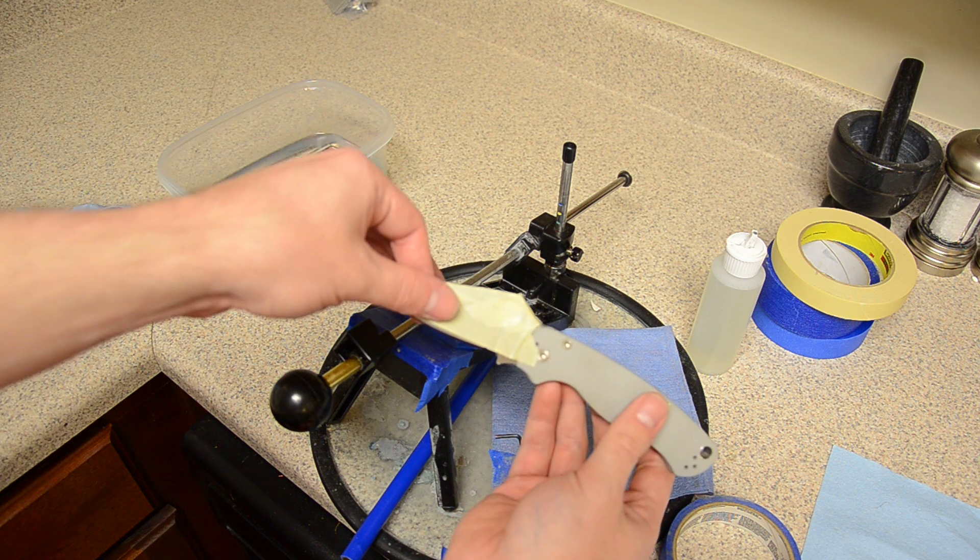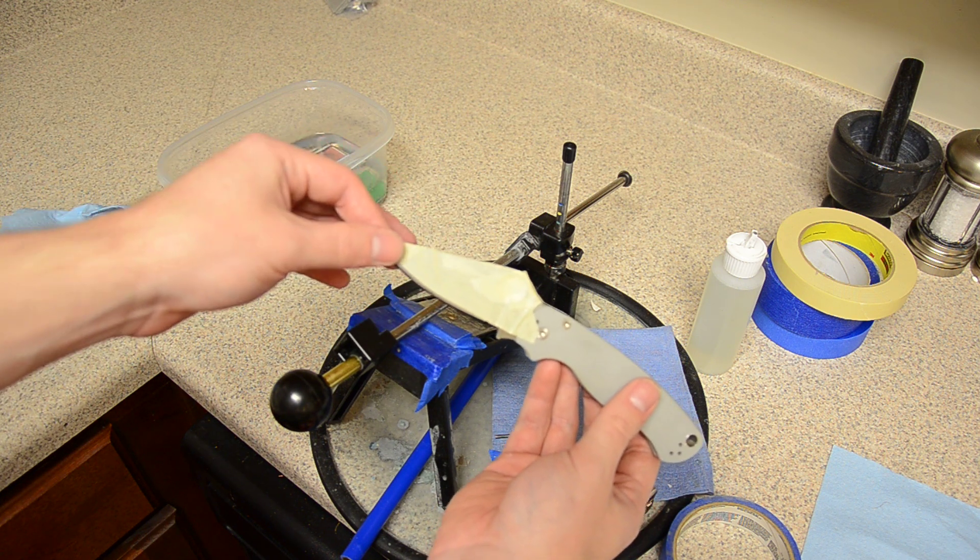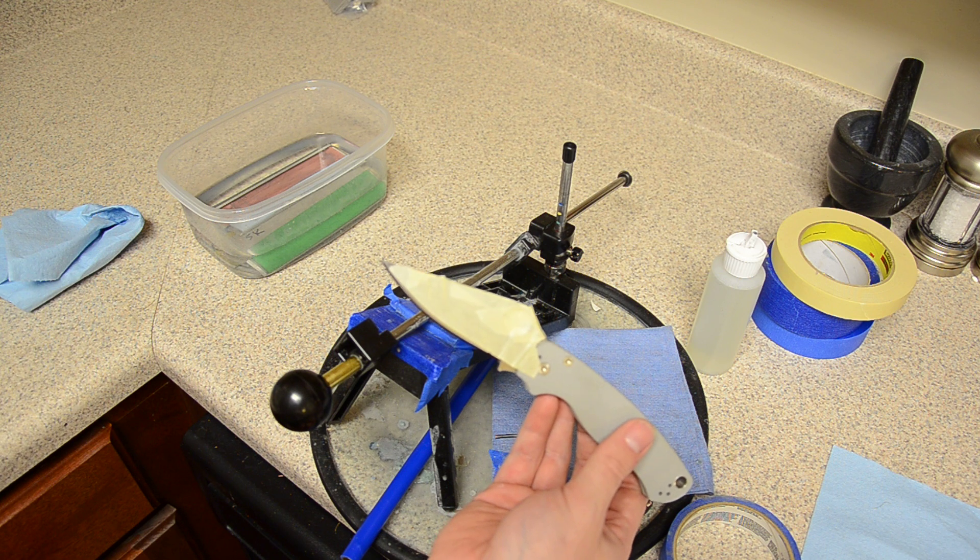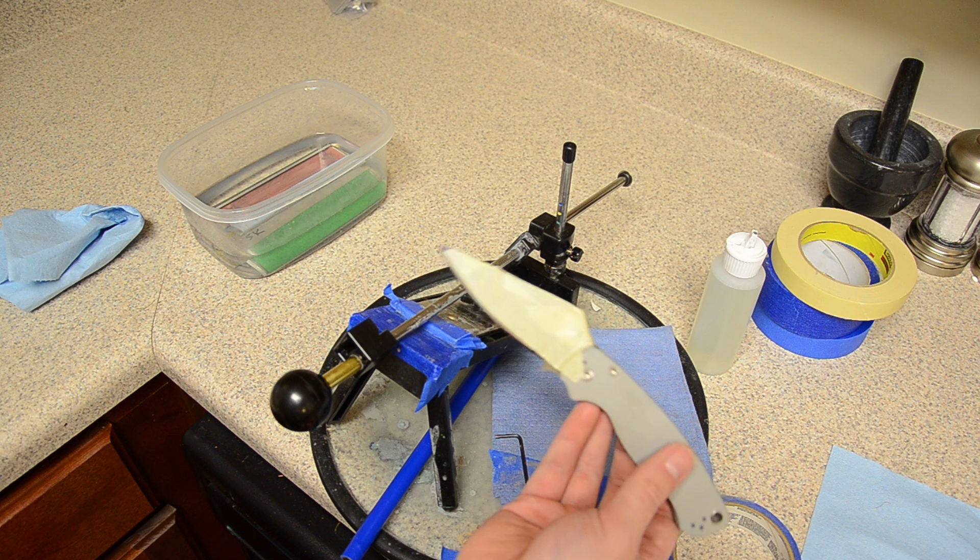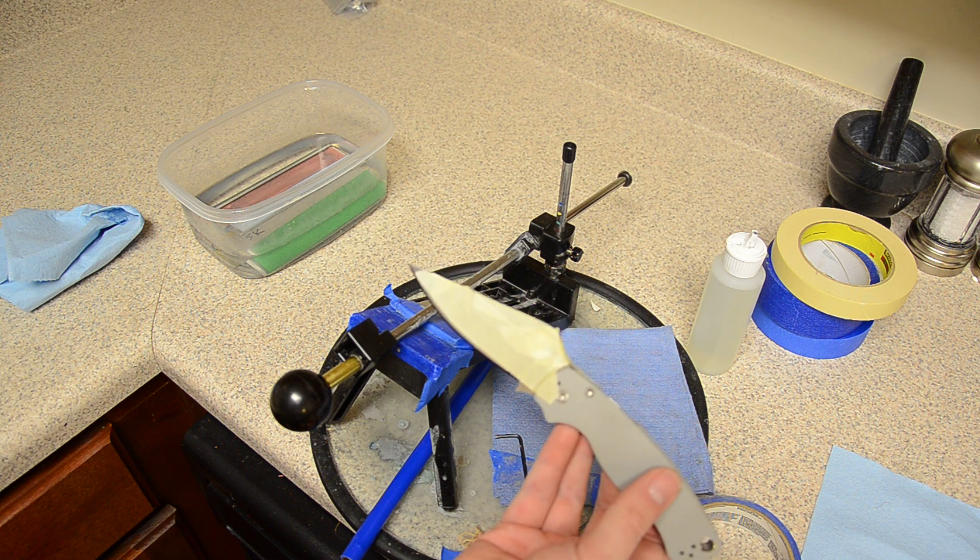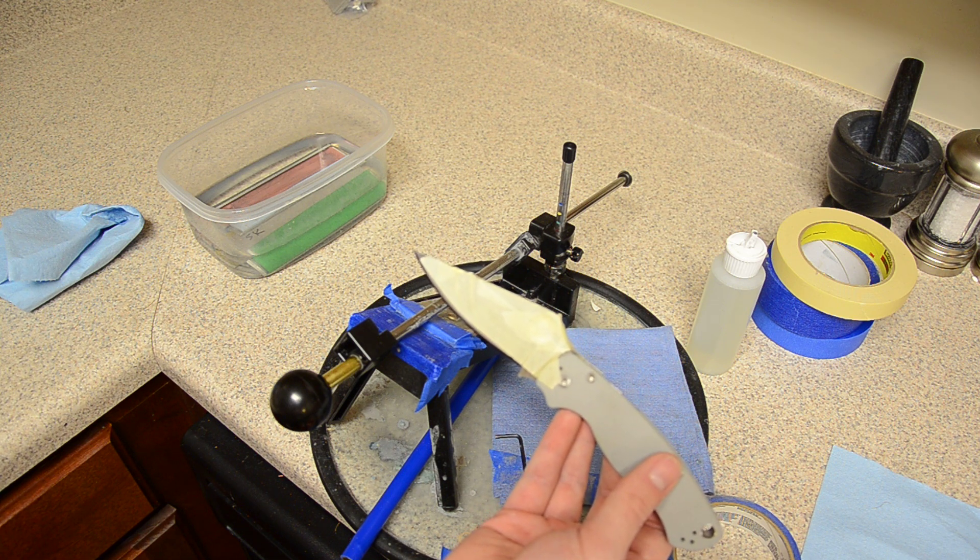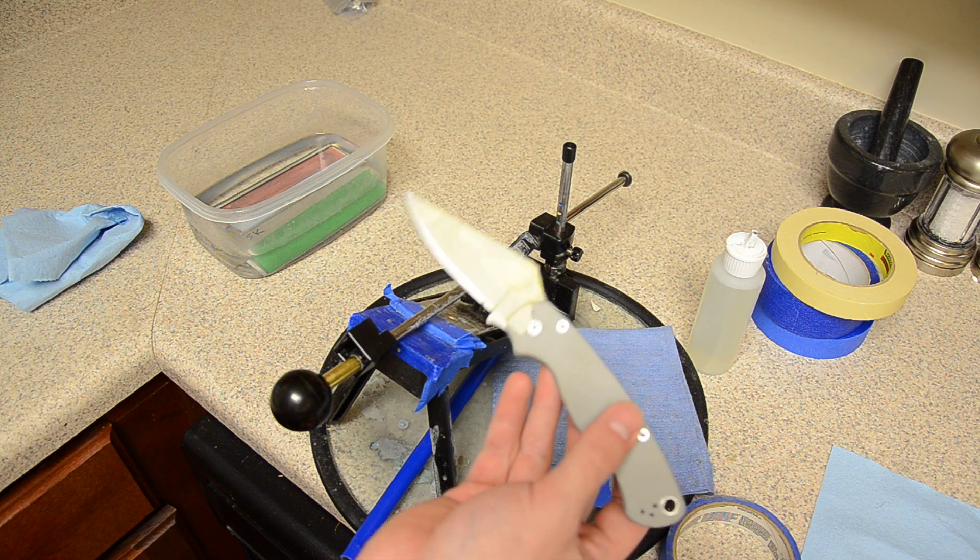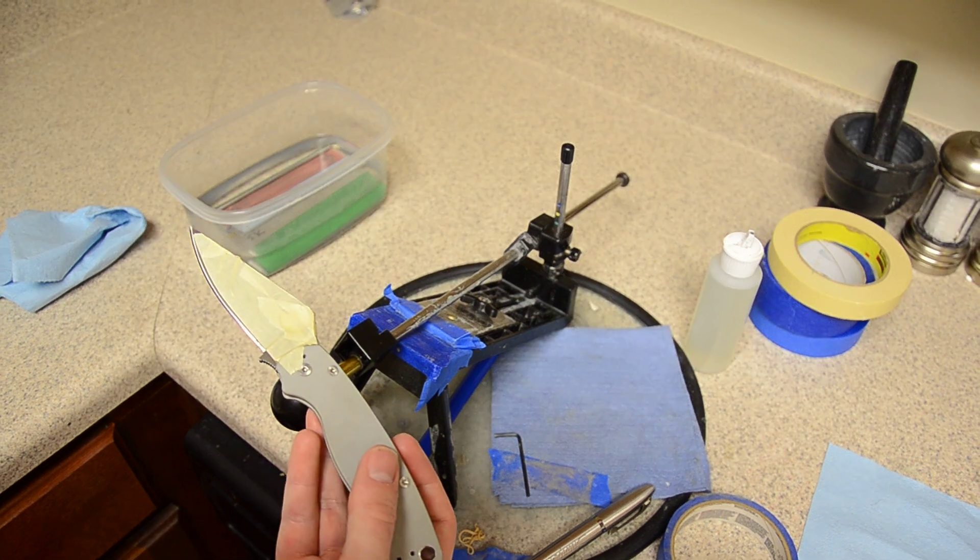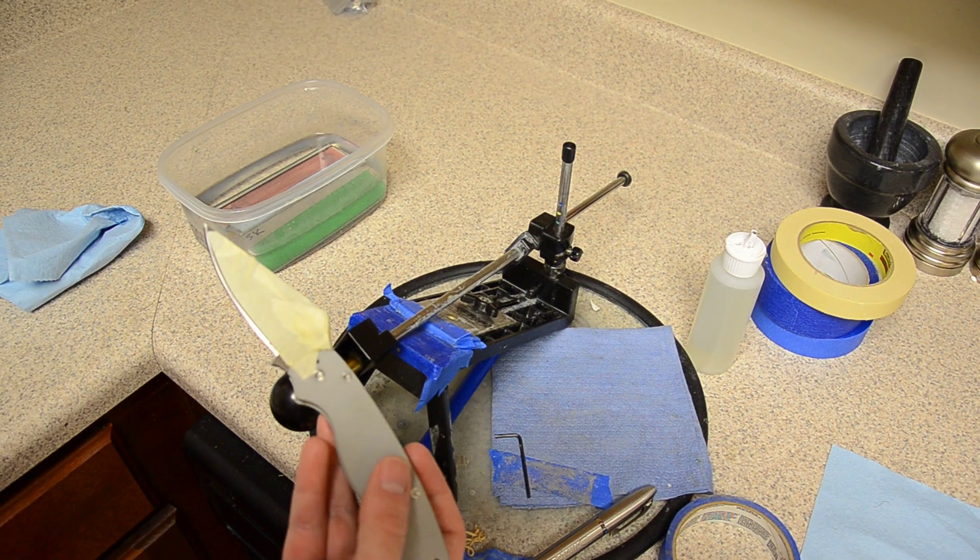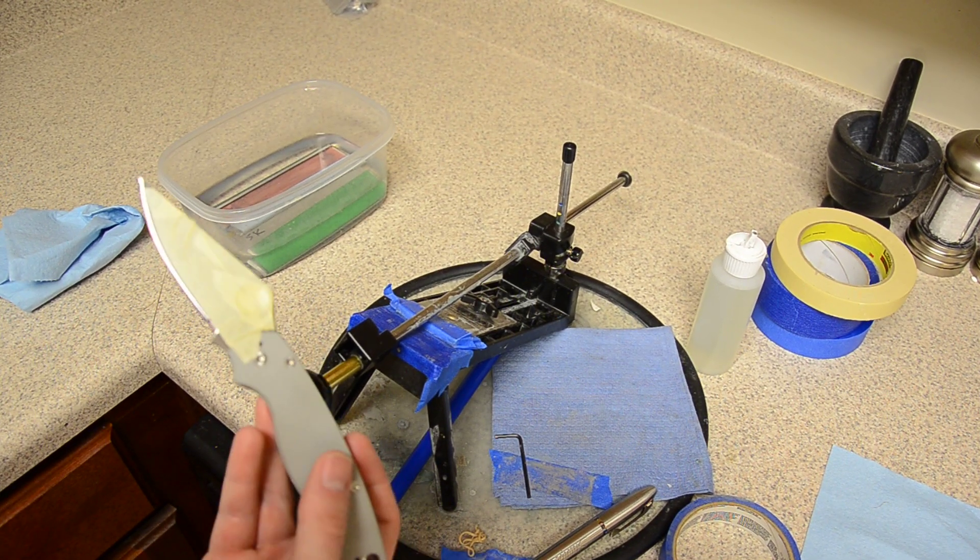I'm using masking tape to tape the blade up. I found this works better than blue painter's tape because mainly it keeps its integrity when it's wet. Blue painter's tape will lose all of its adhesive qualities when it's wet, and masking tape seems to keep that.